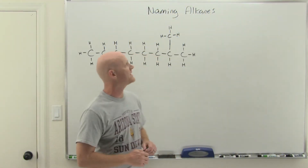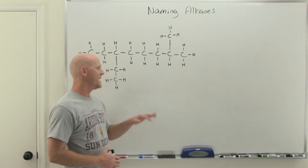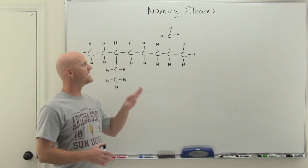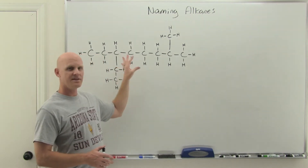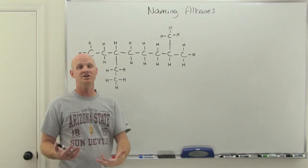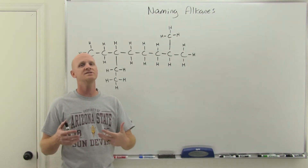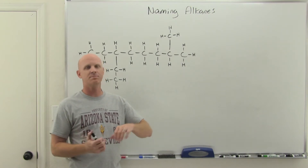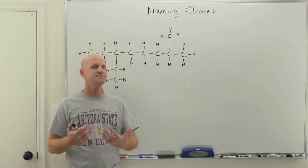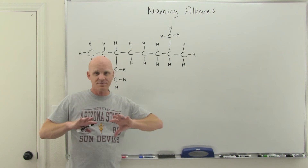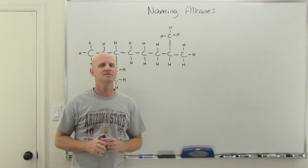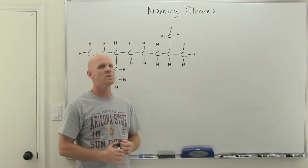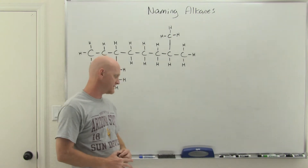When naming alkanes, there's one big division: we break an alkane into the parent chain — the longest continuous chain of carbons — and everything that's a branch coming off that is called a substituent. The name is broken up in a similar way: we name the substituents first, and the parent chain always comes at the end of the name.